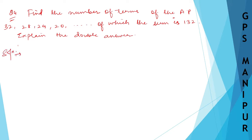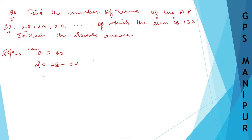So what is given here? The first term a is equal to 32. d will be equal to the second term minus the first term, which is 28 minus 32, so d equals minus 4. And we know Sn is equal to 132 — the sum is given.